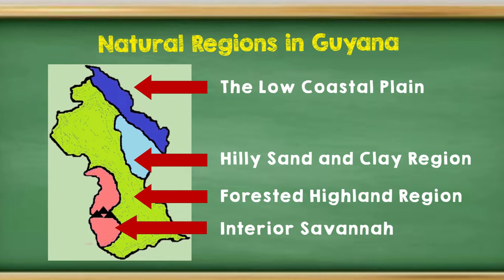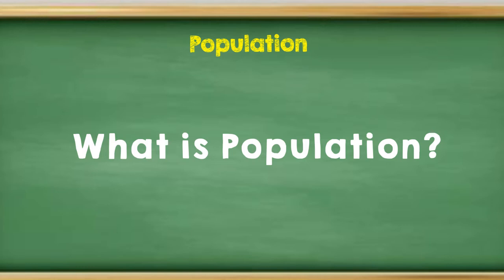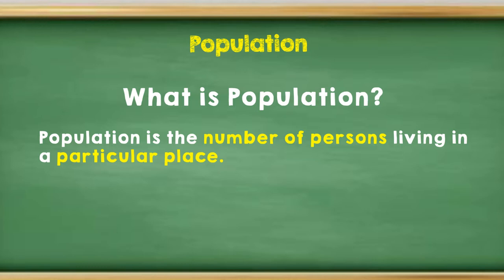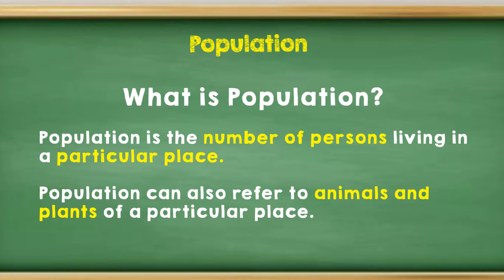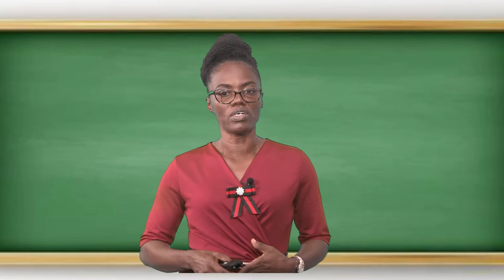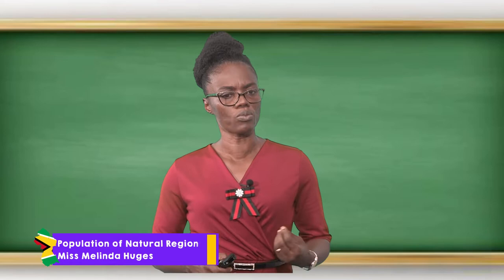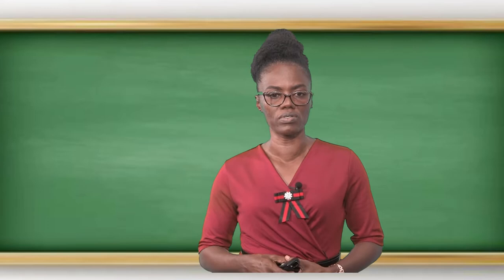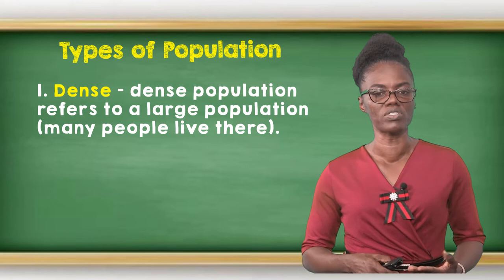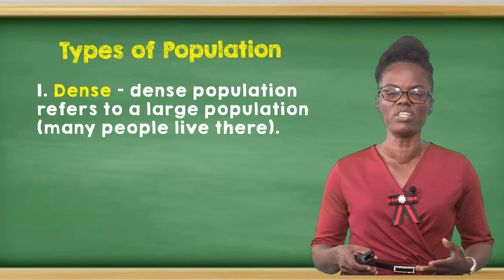Population. What is population? Population is the number of persons living in a particular place. Population can also refer to animals and plants of a particular place too. So, in this lesson, we will examine types of population as it relates to people who live in the different natural regions.